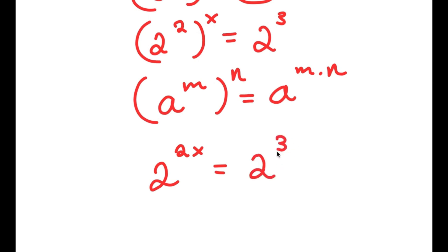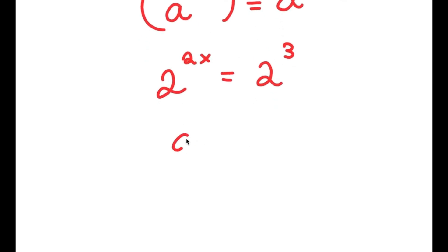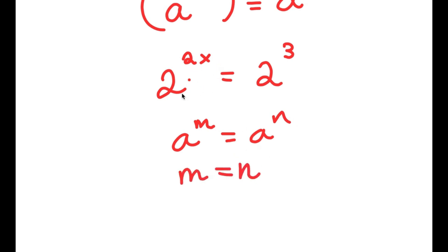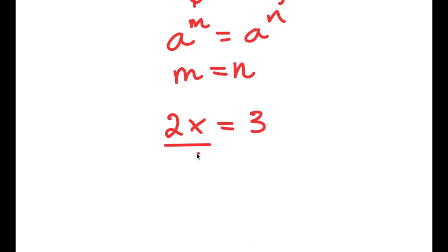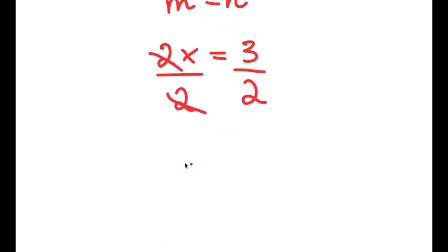Now this is equal to 2 to the power of 3. Since the bases are equal, if a to the power of m equals a to the power of n then m equals n. So 2x is equal to 3. Dividing both sides by 2, these cancel out and I get x is equal to 3 over 2.